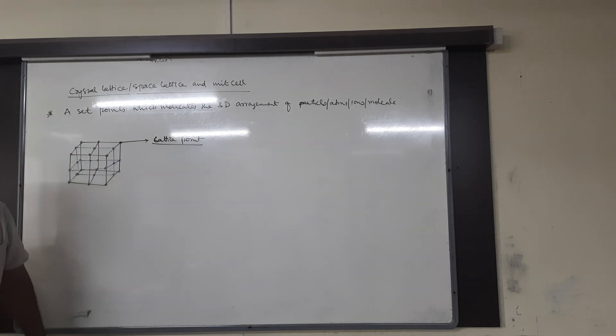The smallest repeating unit of a big crystal is called unit cell. The property of a crystal depends on the property of its unit cell.